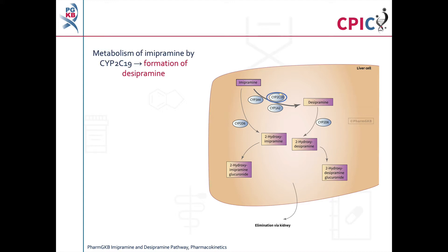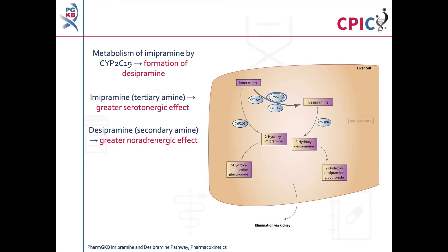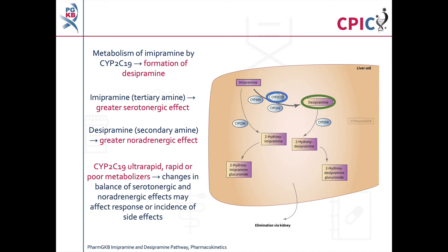Imipramine is metabolized by CYP2C19 to desipramine, which is an active metabolite. Imipramine is a tertiary amine with a greater serotonergic effect, while desipramine is a secondary amine with a greater noradrenergic effect. In CYP2C19 ultra-rapid, rapid, or poor metabolizers, there can be changes in the balance of serotonergic and noradrenergic effects — with greater noradrenergic effects in ultra-rapid and rapid metabolizers and greater serotonergic effects in poor metabolizers. This may affect response or incidence of side effects.